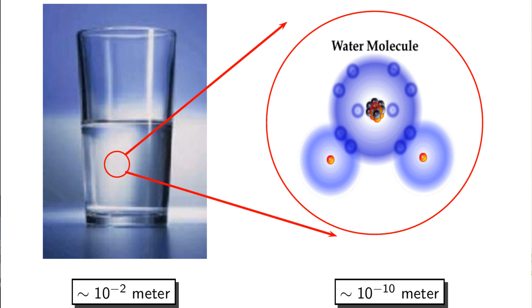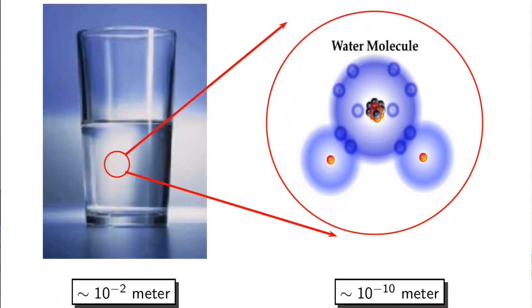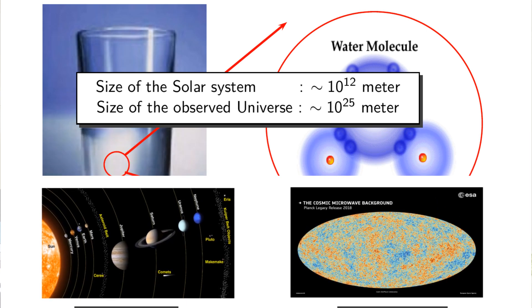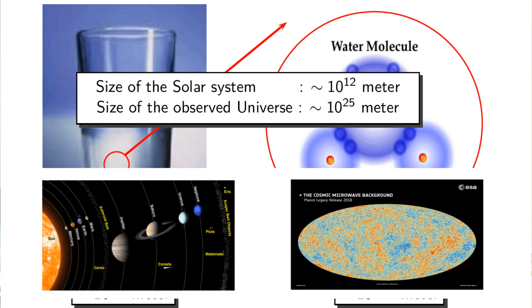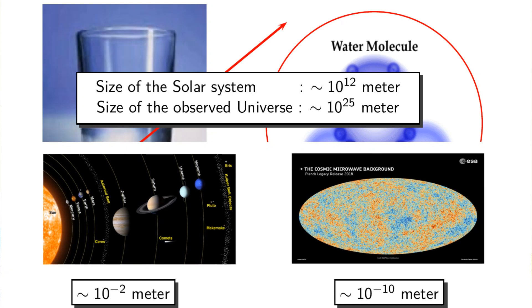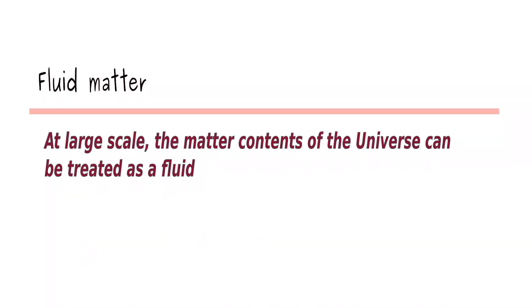In other words, one can apply different principles to study the same given system at different scales. For this example of water, these two scales differ by a factor of 10 to the power 8. Now, if you compare the size of the solar system and the observed universe, then you can see that their scales differ by a factor of 10 to the power 13, which is much higher. Therefore, at the large scale, the matter contained in the universe can be treated as a fluid.